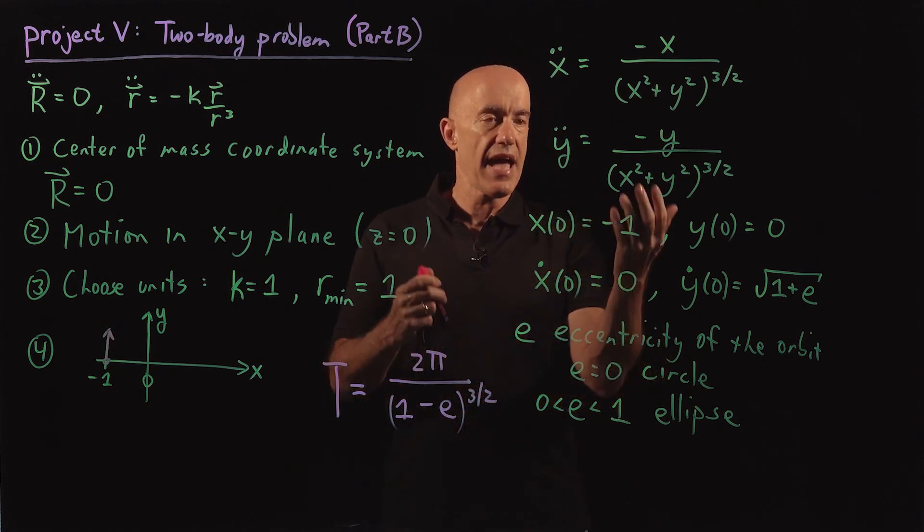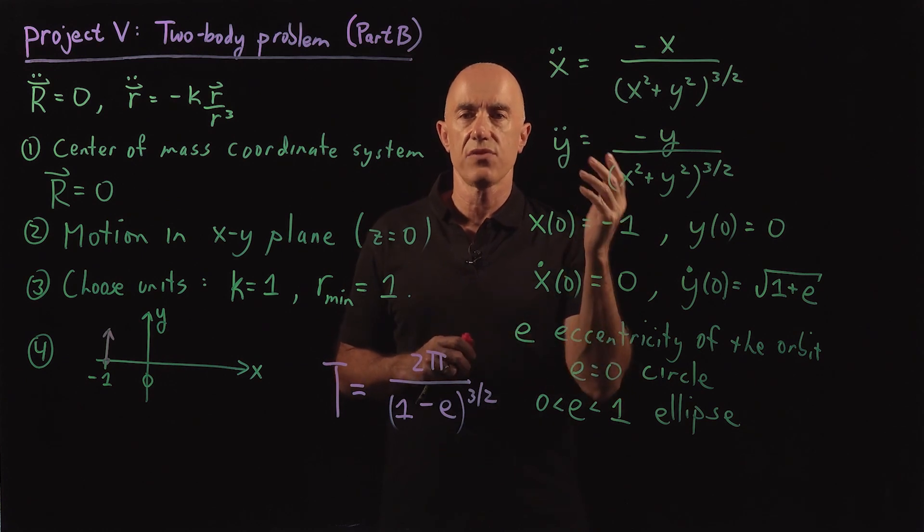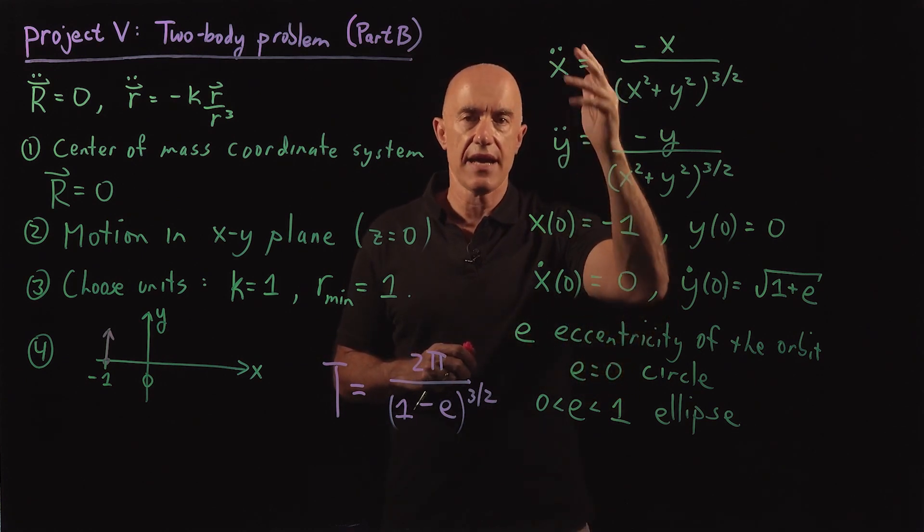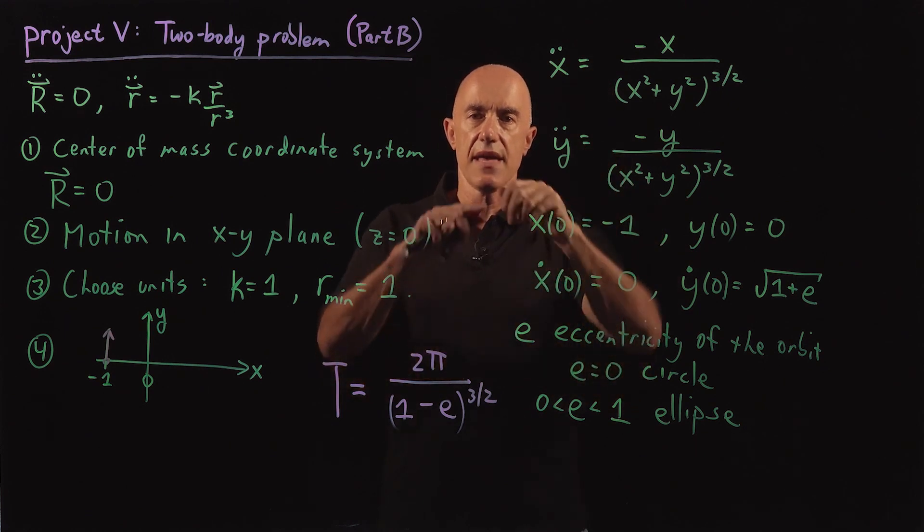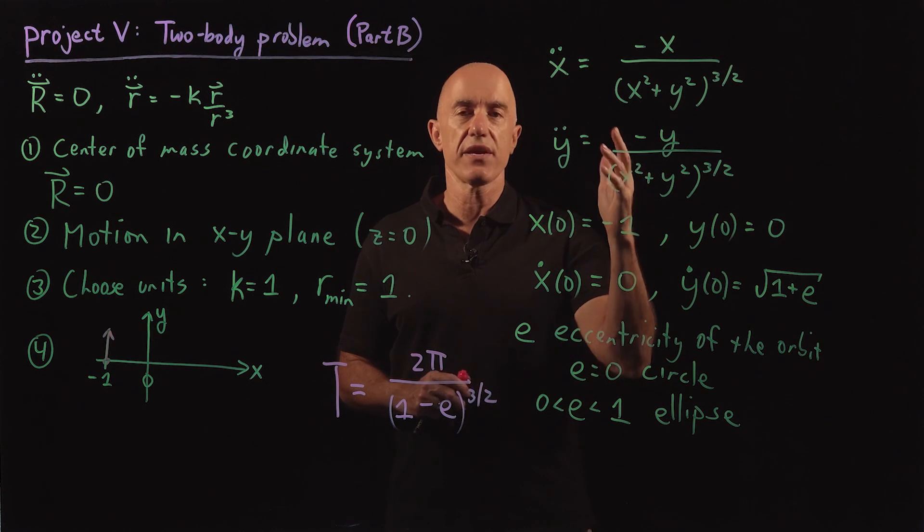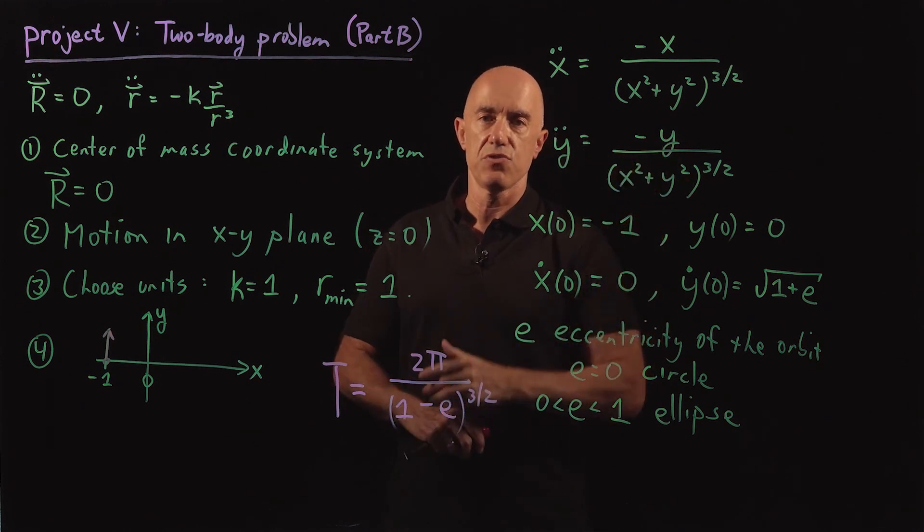And then the end result then will actually, once you solve for x and y, you want to construct x1, y1, and x2, y2, and then plot the motion of the two masses. So you want to go then from the one body problem back to the two body problem. So you can visualize how these two masses move around each other.